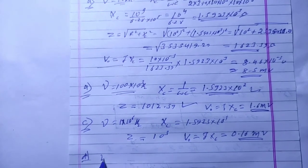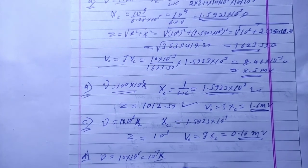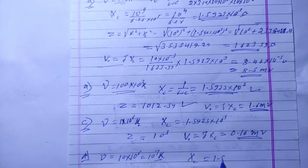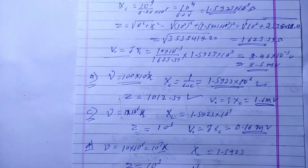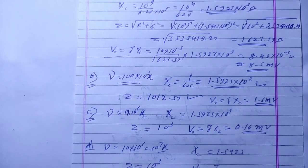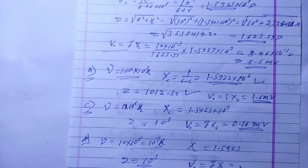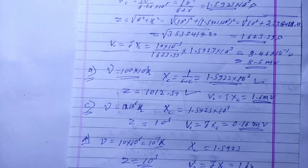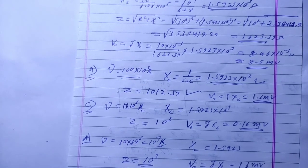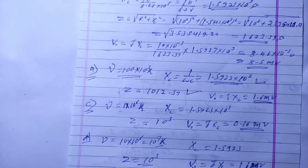For the next part, frequency is 10 MHz, i.e., 10 to the power 7 Hz. XC equals 1.5923 directly. Z is approximately 10 to the power 3 ohms. The output, I into XC, gives 0.16 — sorry, that is 16 microvolt. So the output for 10 MHz is 16 microvolt.